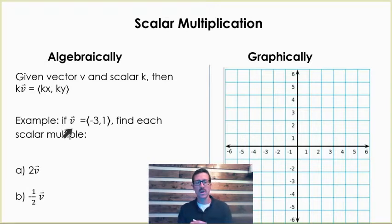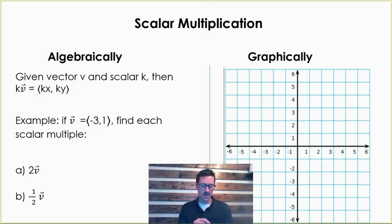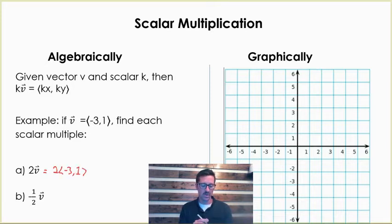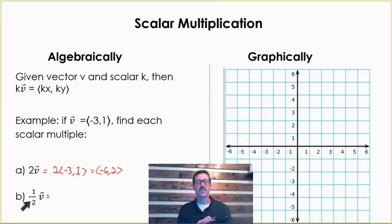So if we started with vector v, we had a horizontal component of negative 3 and a vertical component of 1. To find each scalar multiple, for the first one, we would do the scalar of 2 times negative 3, 1, which is going to be negative 6 comma 2.